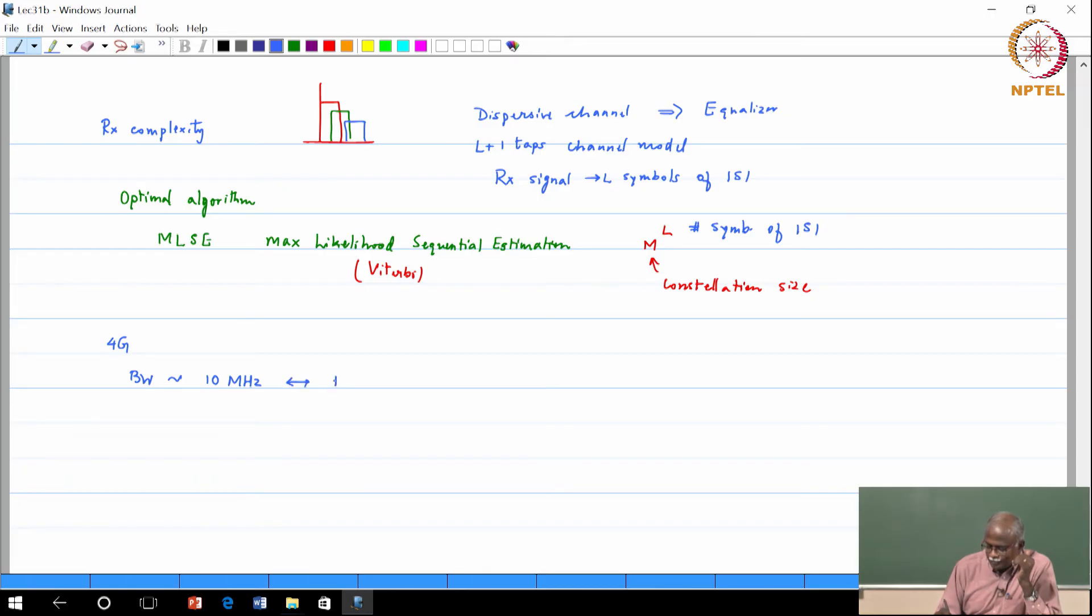Now bandwidth is related to baud rate - number of symbols, number of times you use the - so this is related to baud rate. It is related to bit rate also, but it is related to the bit rate through the baud rate. Baud rate times the number of bits per symbol is your bit rate. So baud rate is the more fundamental quantity when we talk about the bandwidth.